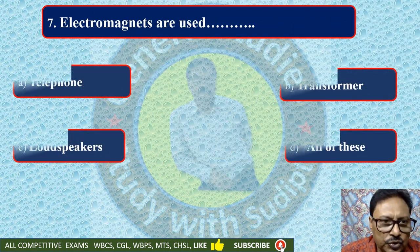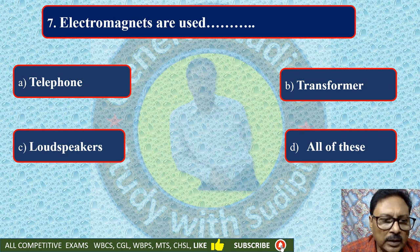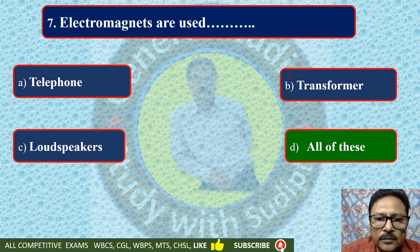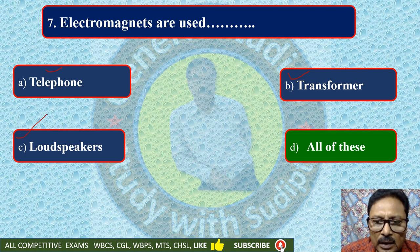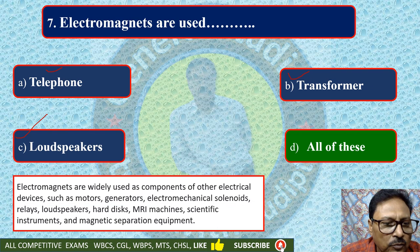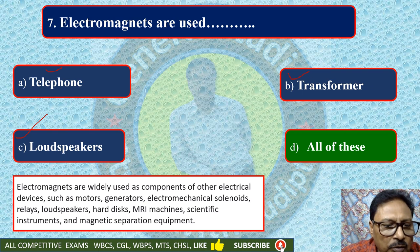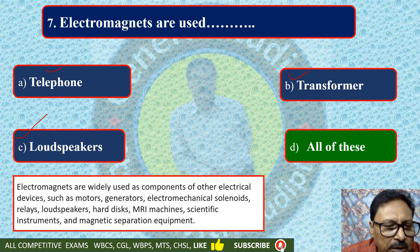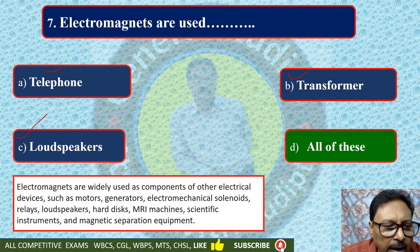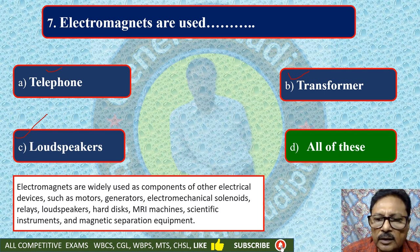Electromagnets are used in — telephone, transformer, loudspeaker, or all of these. Electromagnets are used in all three options: telephone, transformer and also loudspeaker. So all of these is the correct option. Electromagnets are widely used as a component of other electrical devices such as motors, generators, solenoids, relays, loudspeakers, hard disks, MRI machines, and magnetic separation equipment. There is a lot of use of electromagnets in our daily life.